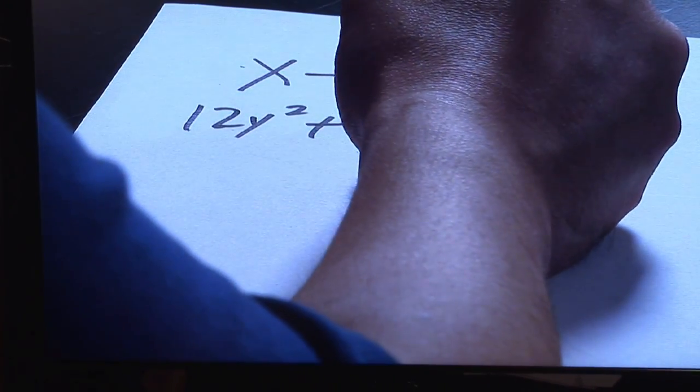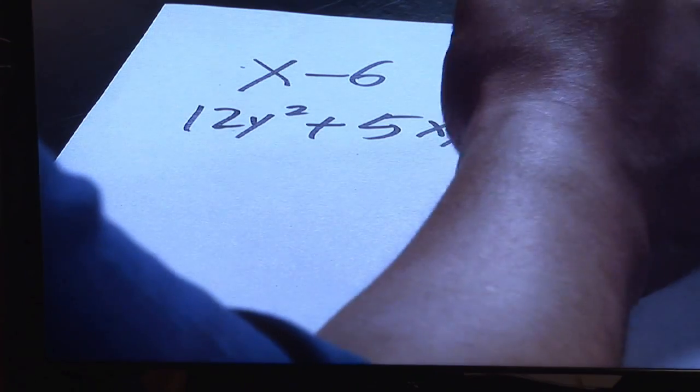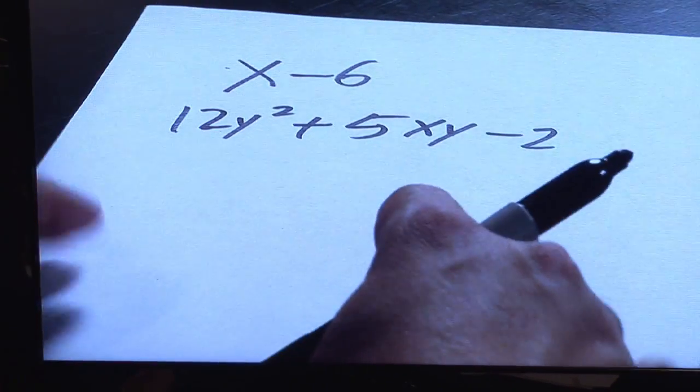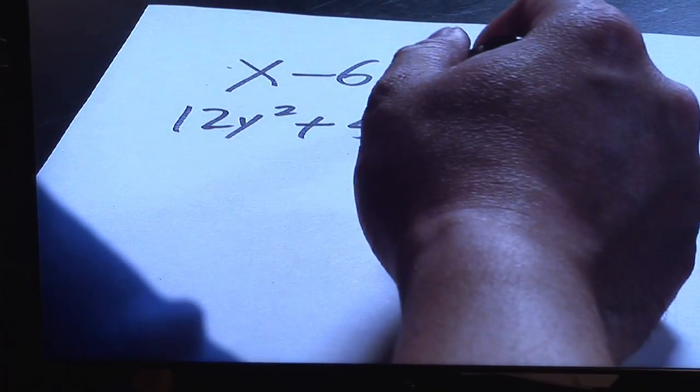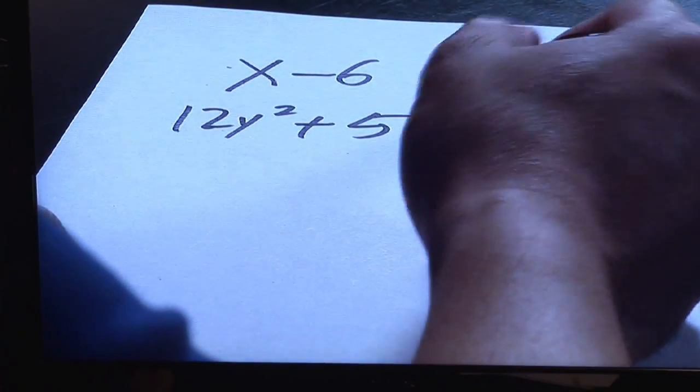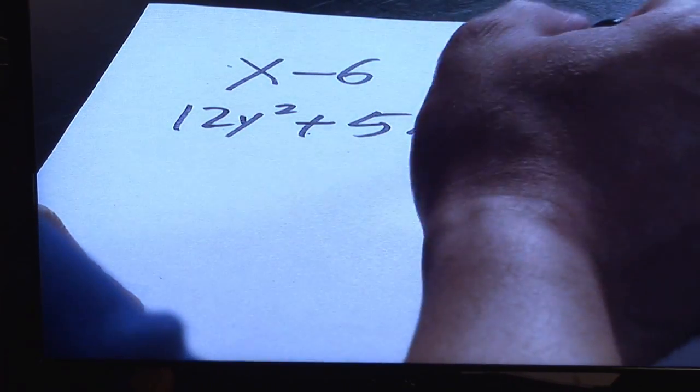Here's another example. Twelve y squared plus five xy minus two. A little longer, you have a power, exponent two, twelve is being multiplied with y squared, five is being multiplied with the x multiplied with the y. And as you can tell, there's addition and subtraction.